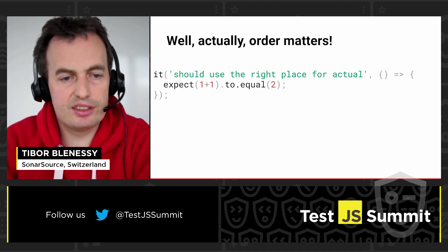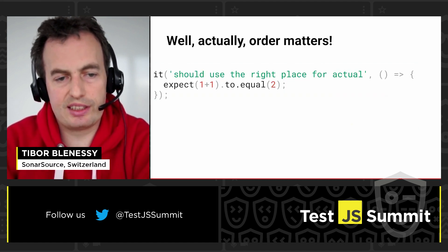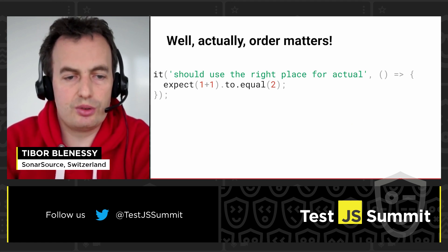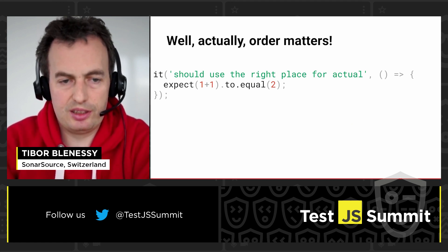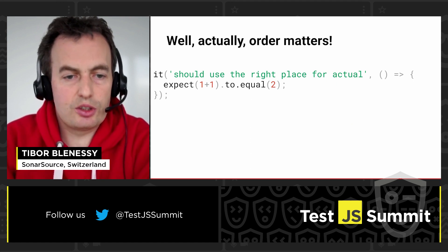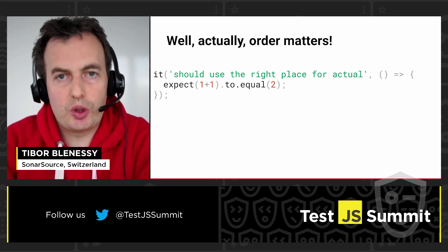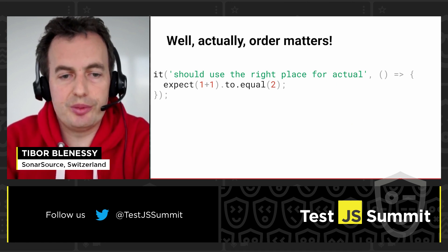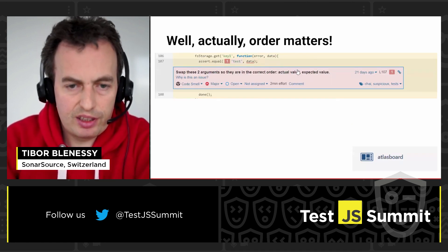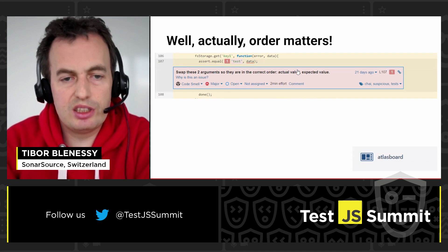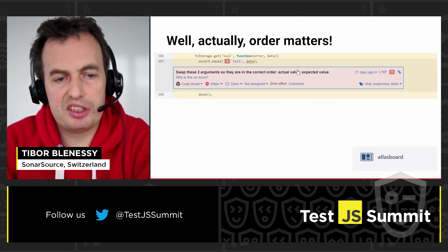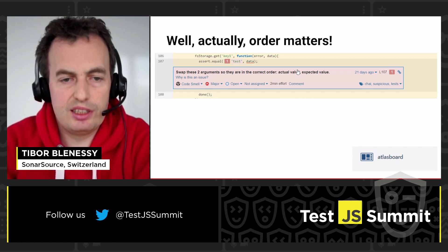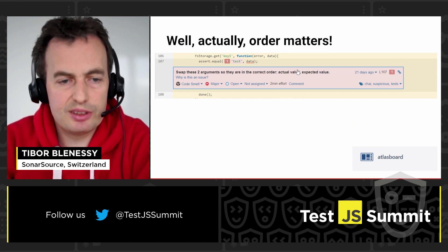Correctly, it should look like this — you should have the addition in the expect call and it should equal to your expectation, in this case two, which gives a better message where three is expected to equal to two. So the result we computed is three and our expectation was two. Here is a real life project having this problem, where you can see that the test data is swapped.